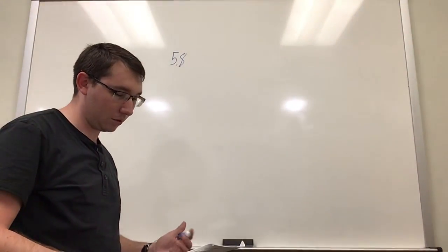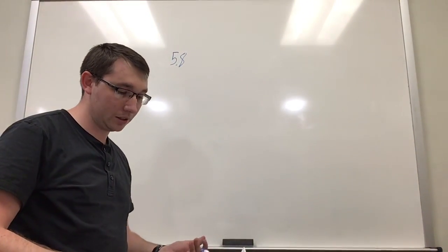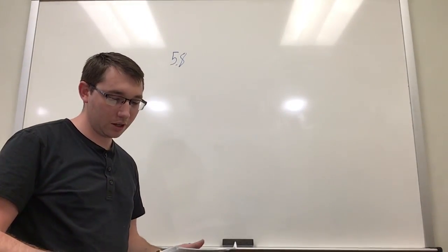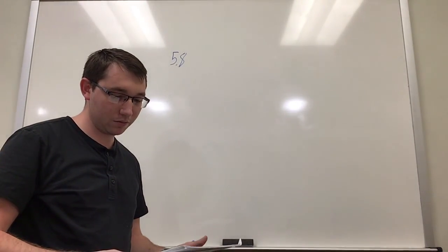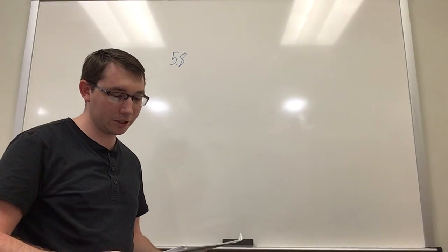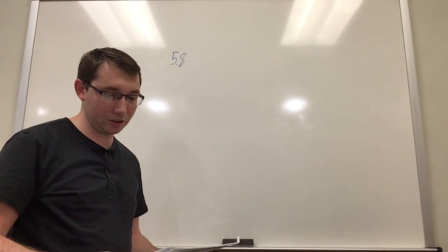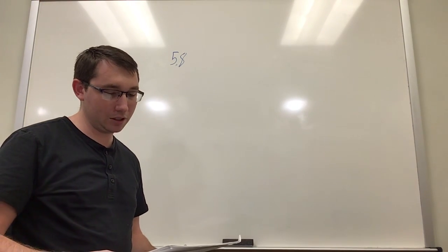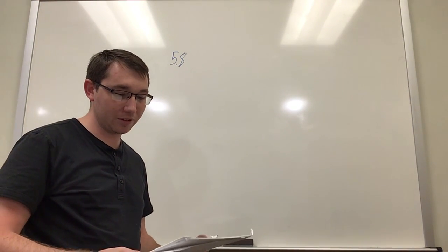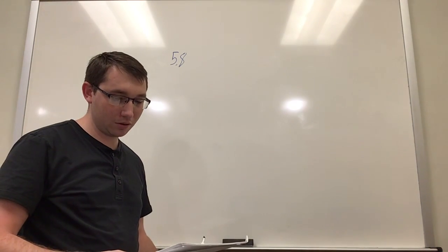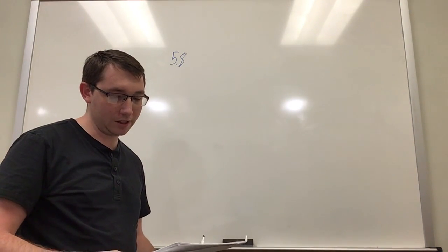Alright, so this time we're doing problem 5.8. The problem says a 1130 kilogram car is held in place by a light cable on a very smooth frictionless ramp. The cable makes an angle of 31 degrees above the surface of the ramp, and the ramp itself rises 25 degrees above the horizon.